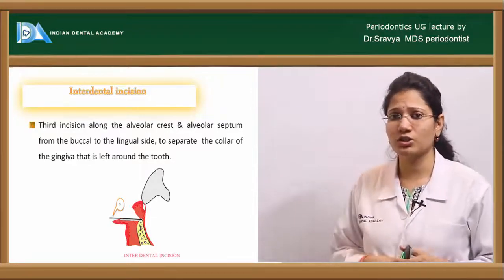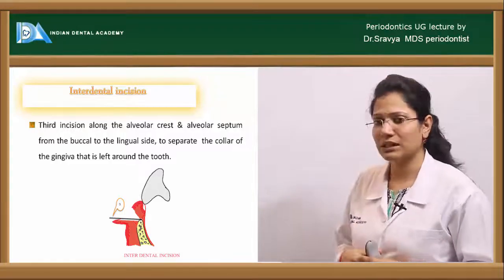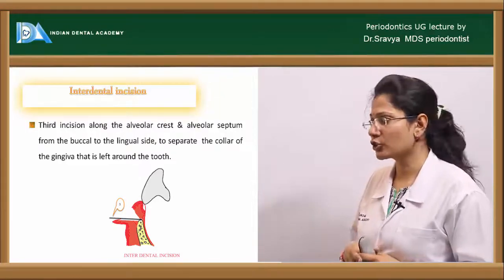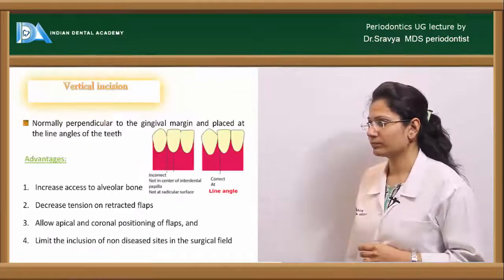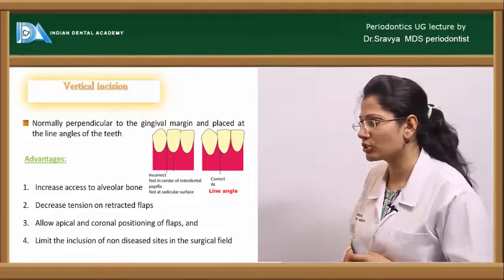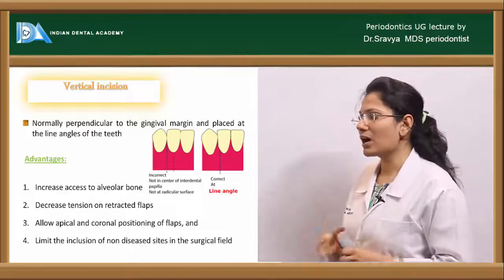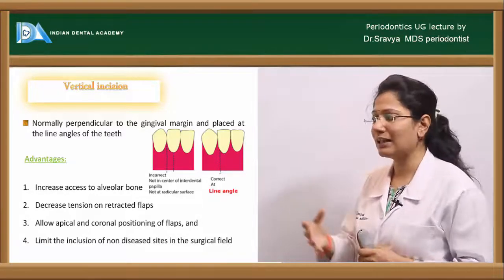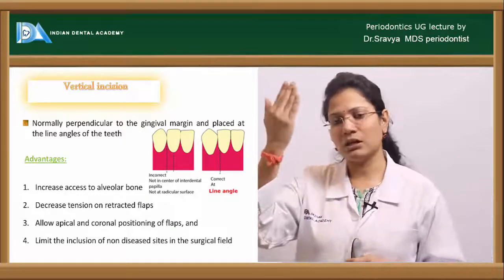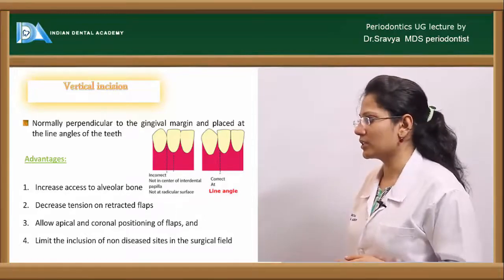The third horizontal incision is the interdental incision, given along the alveolar crest and alveolar septum from the buccal to the lingual side to separate the collar of gingival tissue left around the tooth. Vertical incisions — or releasing incisions — are perpendicular to the gingival margin and placed at the line angles of the teeth. Advantages include better access to the alveolar bone, decreased tension on the flap, ability to shift the flap coronally or apically, and limiting inclusion of non-diseased sites in the surgical field.